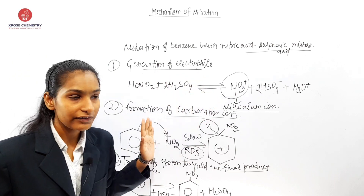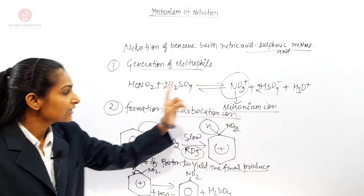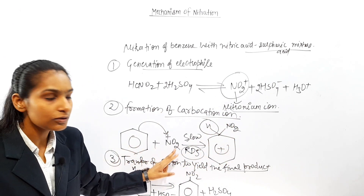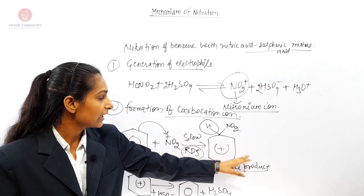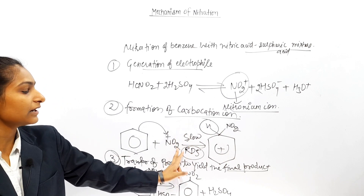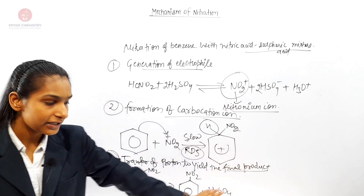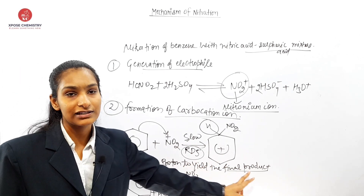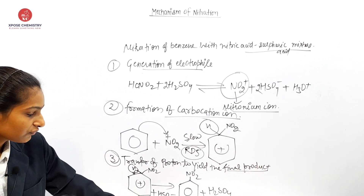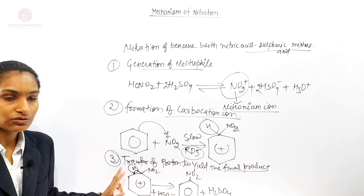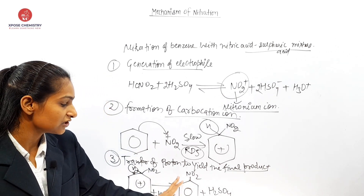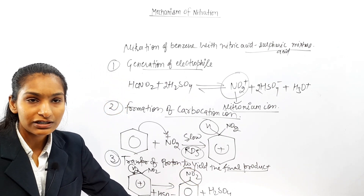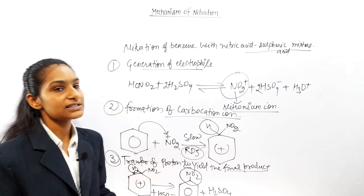In the first step: generation of electrophile. In the second step: formation of Carbocation — the aromatic ring plus NO2 positive forms the Carbocation ion with H and NO2. The proton is then transferred from the aromatic ring, and finally what is obtained is HSO4 negative and Nitrobenzene — the aromatic ring with NO2 group — as our final product. So this is the mechanism of nitration.